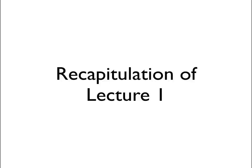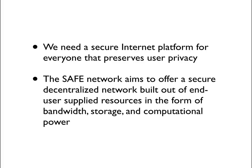Before introducing the content for the second lecture, we'll first recapitulate whatever we presented in the first lecture. Previously, in the last lecture, we saw that there was a need for a secure internet platform for everyone that would preserve user privacy. We saw that the SAFE Network aims to offer such a platform in a way that is built using user-supplied resources in a fully decentralized fashion for security reasons.